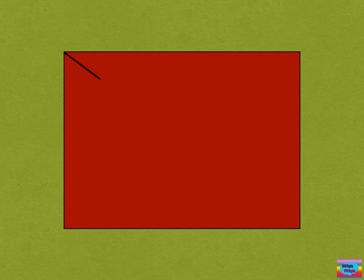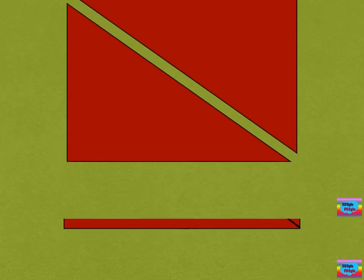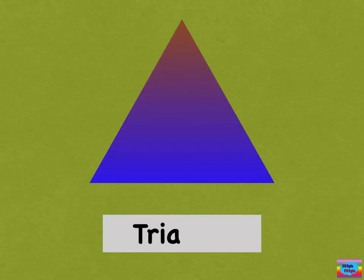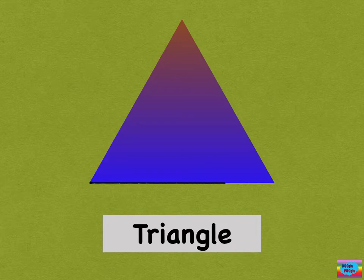And if you cut a rectangle diagonally, you will get two triangles. A triangle has one side, two side, three sides.